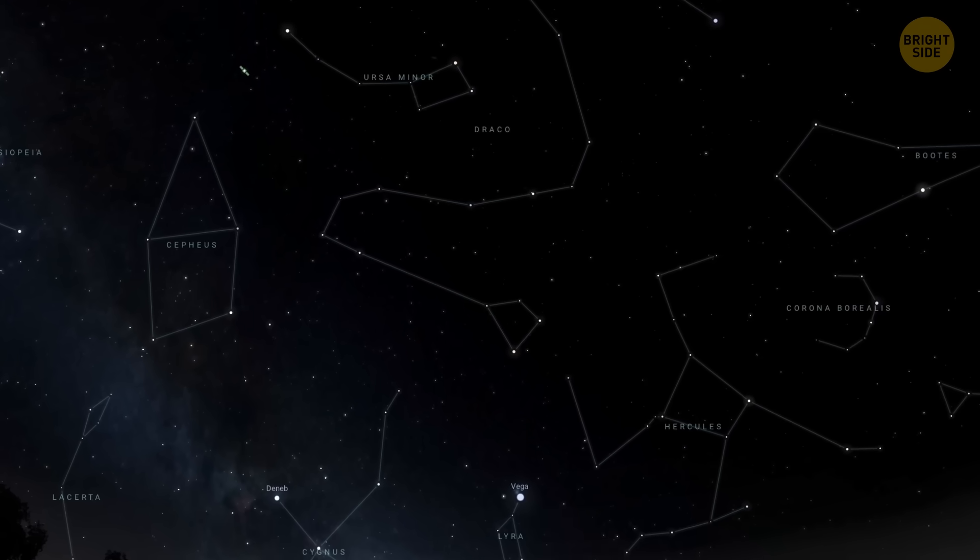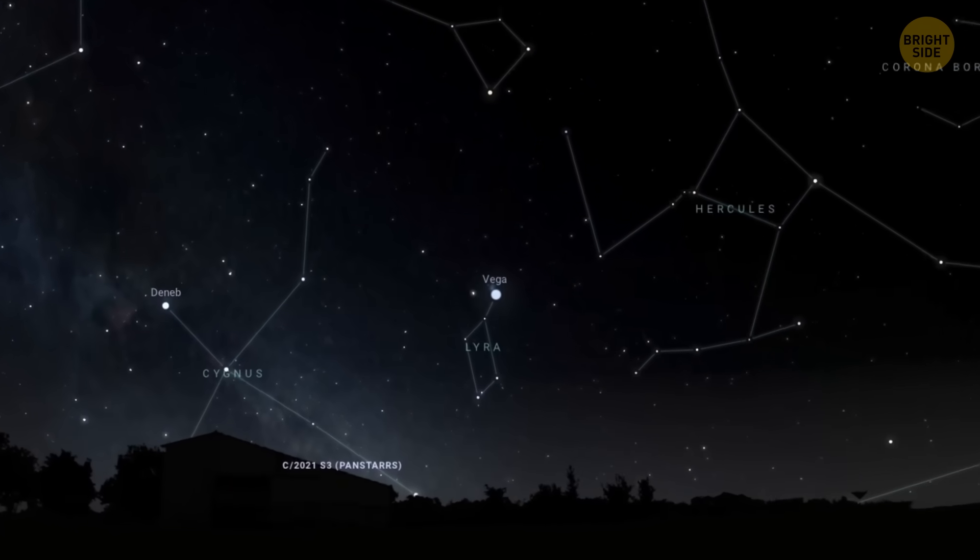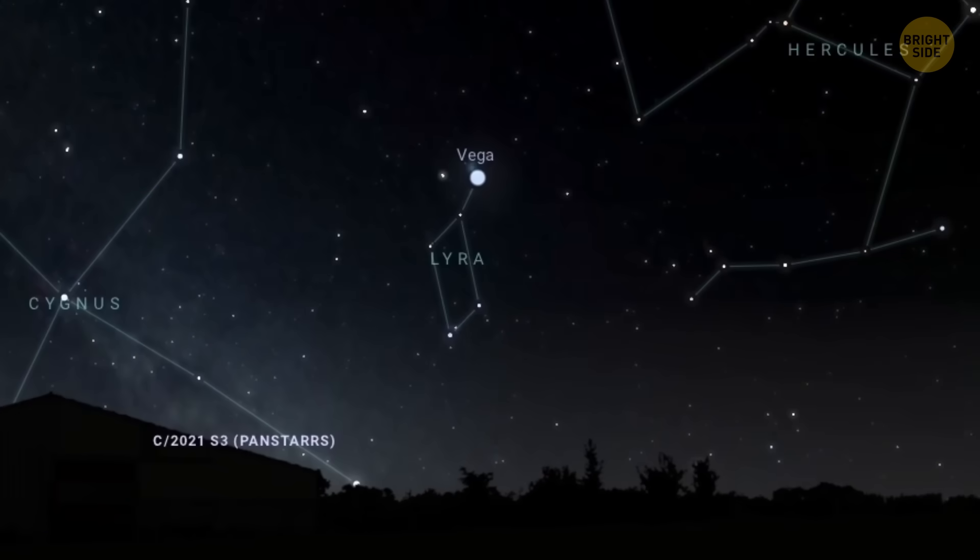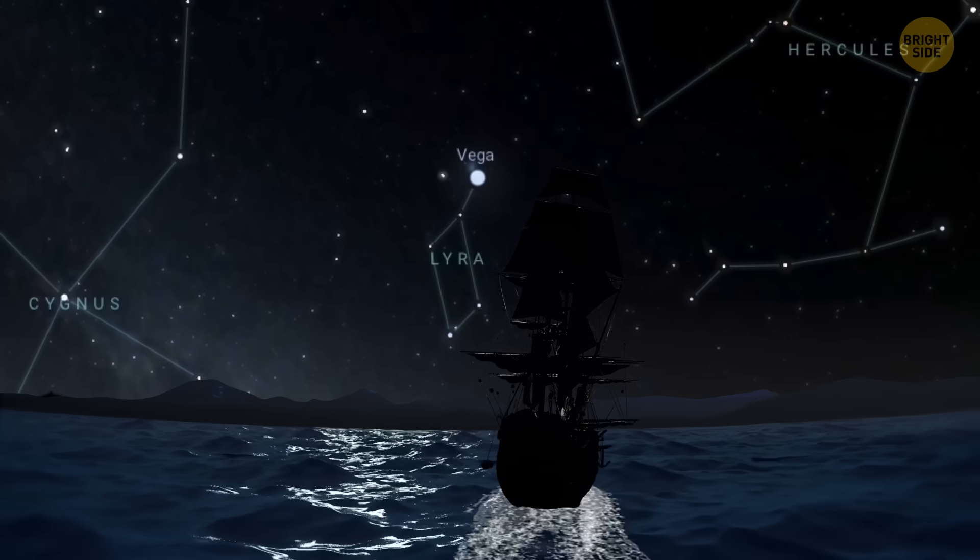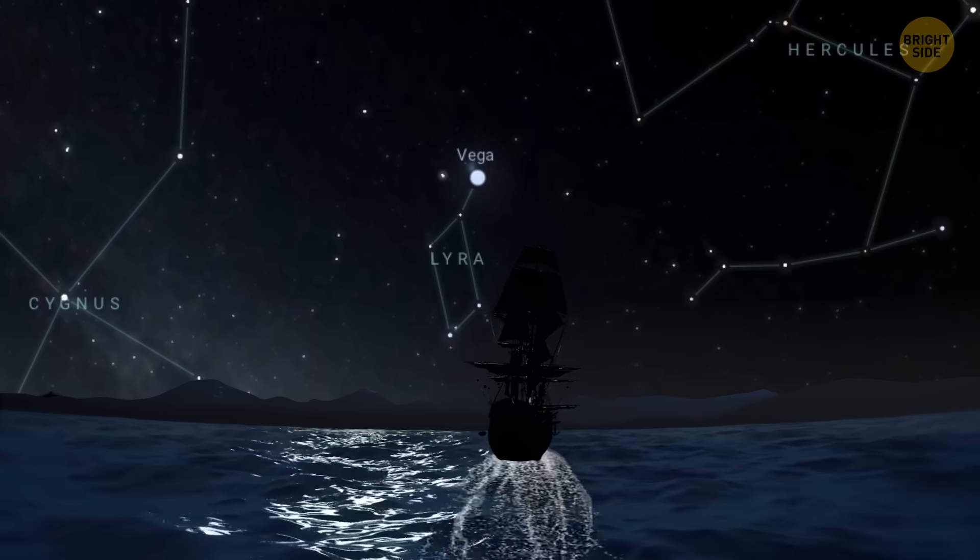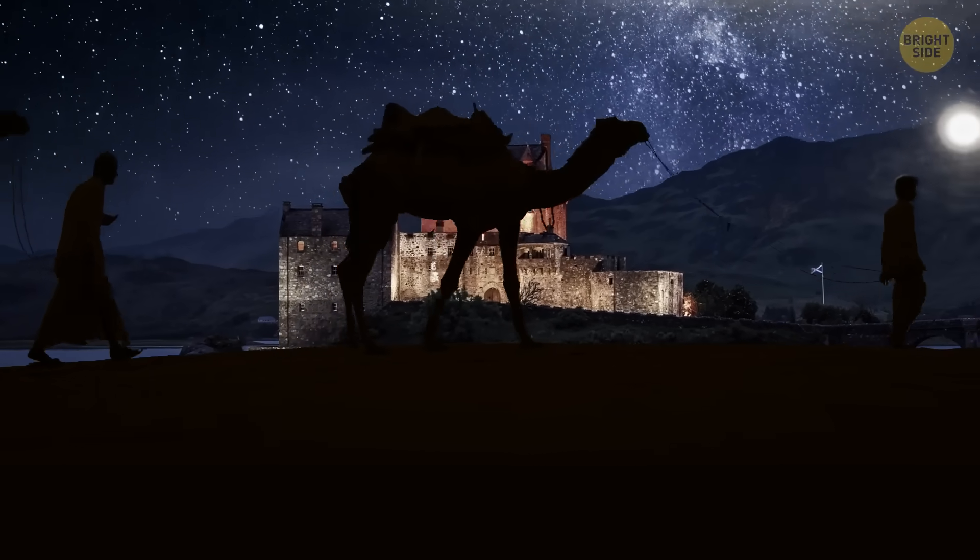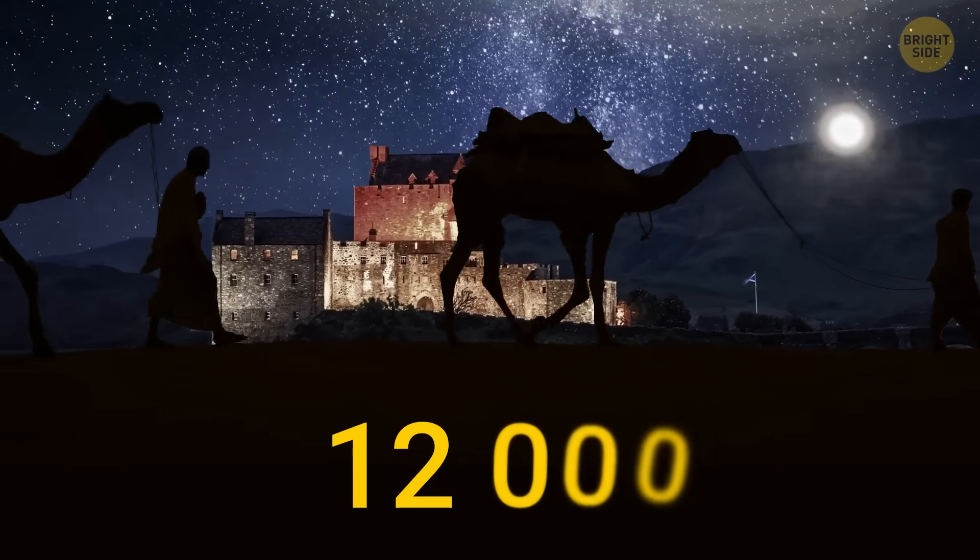Vega has another name, Alpha Lyrae. That's because it's the main star of the Lyra constellation. Vega has been one of the most crucial stars to people since ancient times. It's very bright and blue, hence very recognizable. Vega was the North Star several thousand years ago, and it'll regain this status in 12,000 years or so.